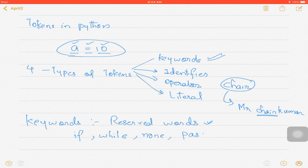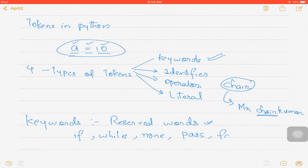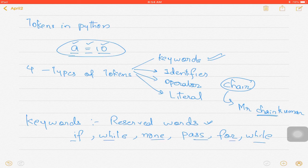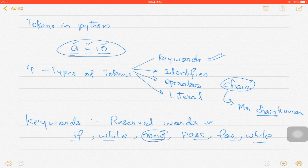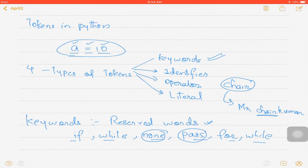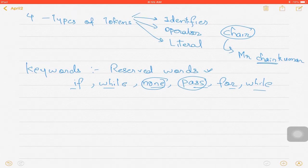Then none, then there can be pass, there can be for, there can be while. We'll look at them individually later on, but for now you have to understand that these words cannot be used for any purpose other than their intended purpose in the language. That is what a keyword is. Now next, we will talk about identifiers.